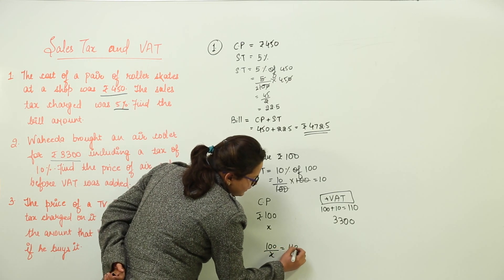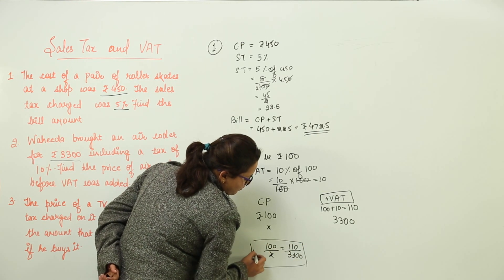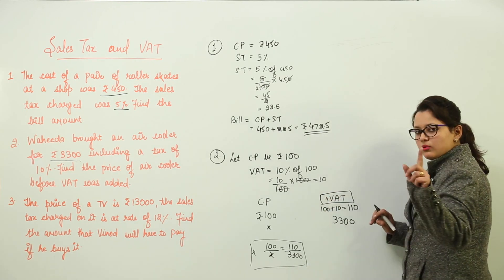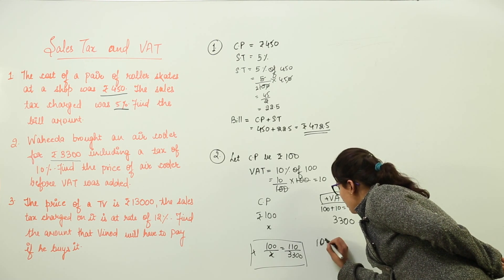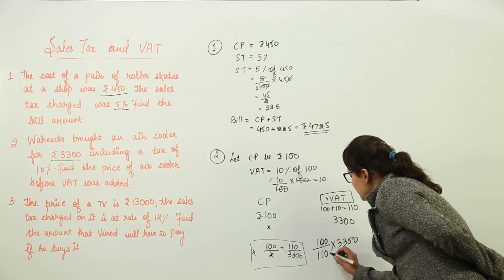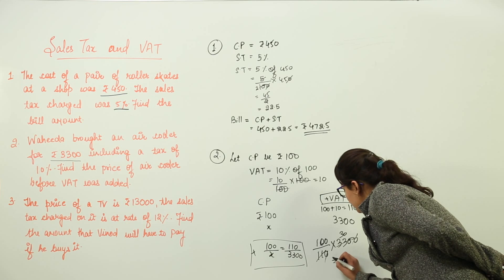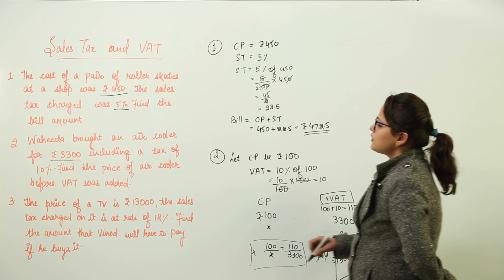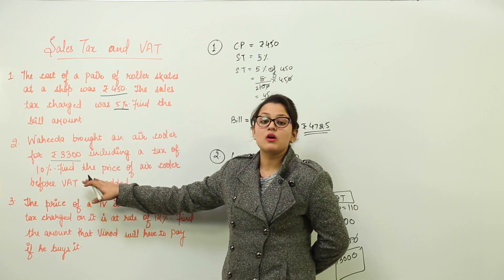How are we going to do this? We will do it simple way: 100 upon X equal to 110 upon 3,300. If you are not familiar with this, you can avoid this. I'll tell you the simpler method. What will be the VAT for one rupee? That would be: the cost price would give you 100 upon 110 into 3,300. Now you cancel the zeros and simplify this further. What do you get? ₹3,000.